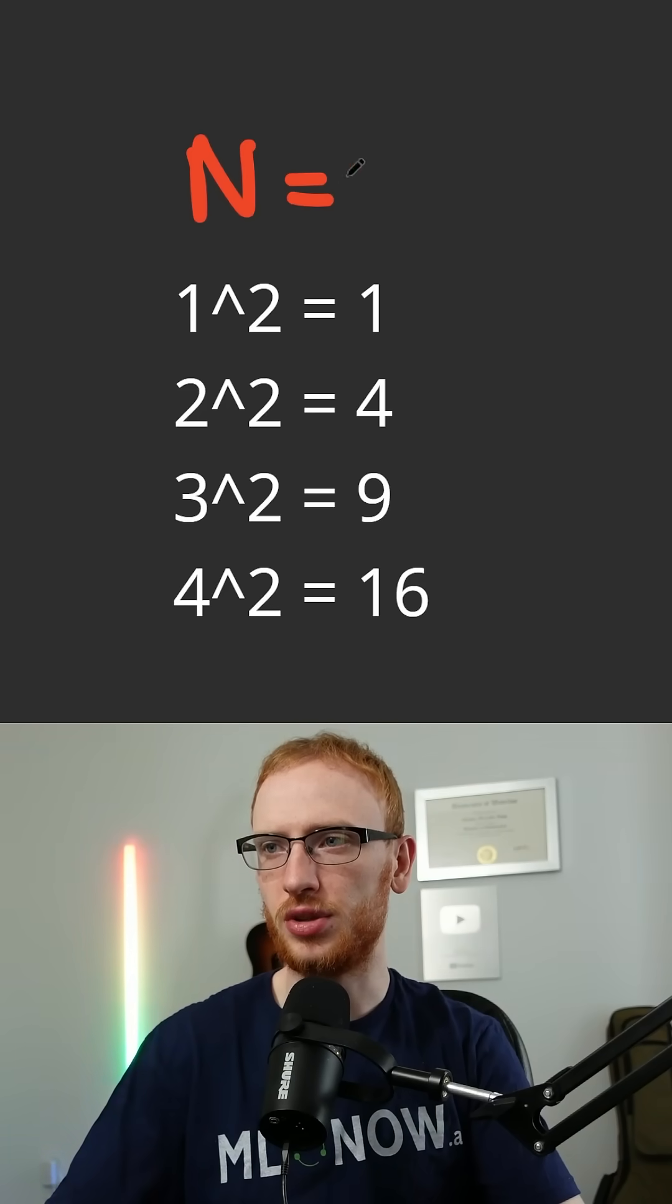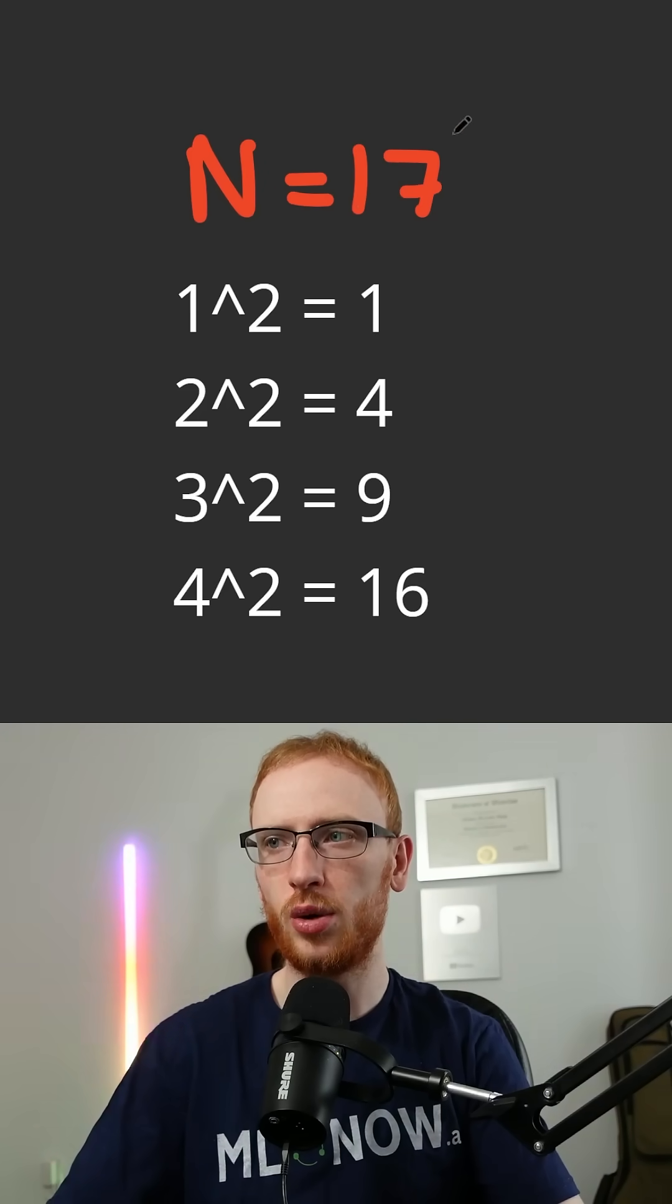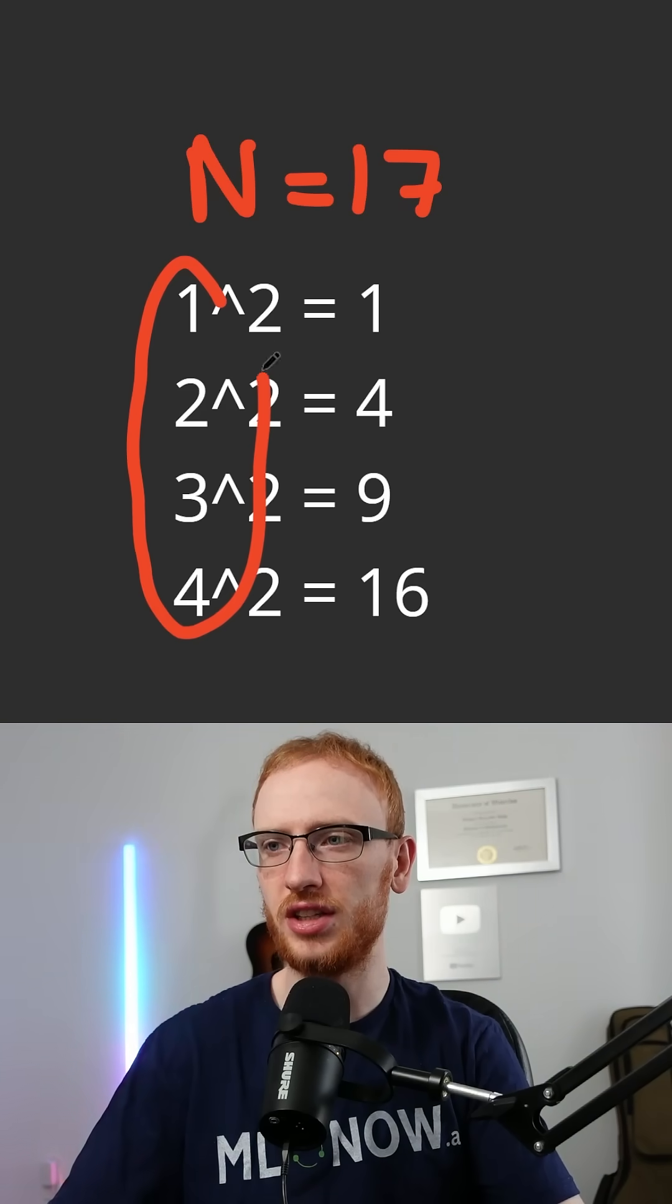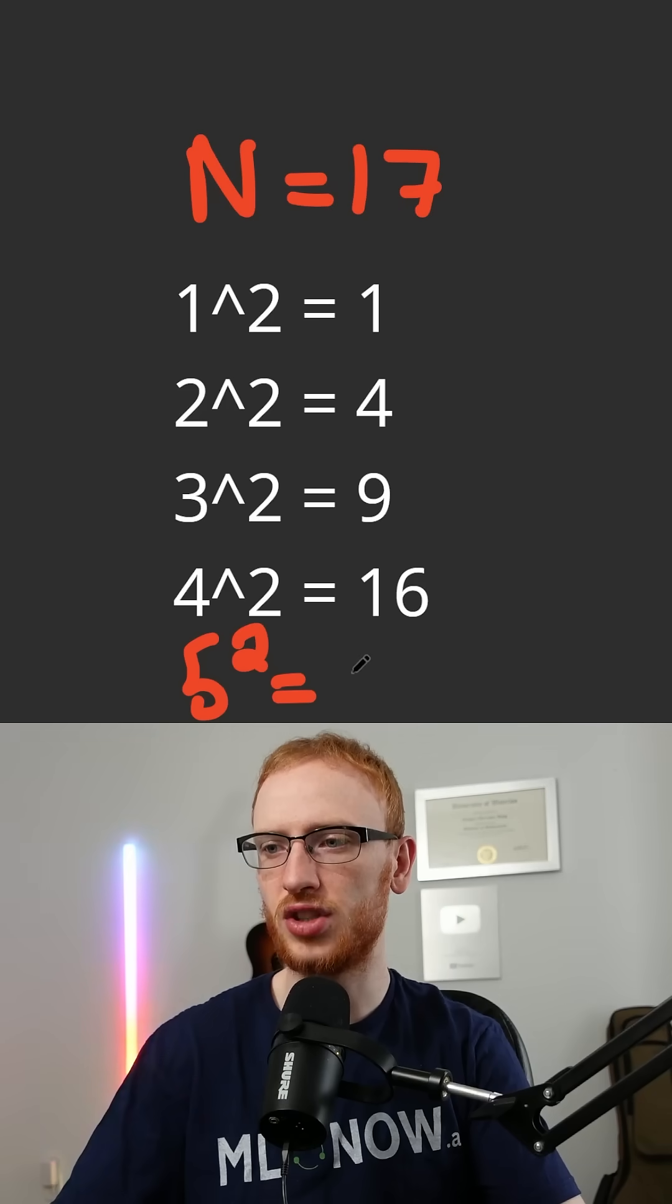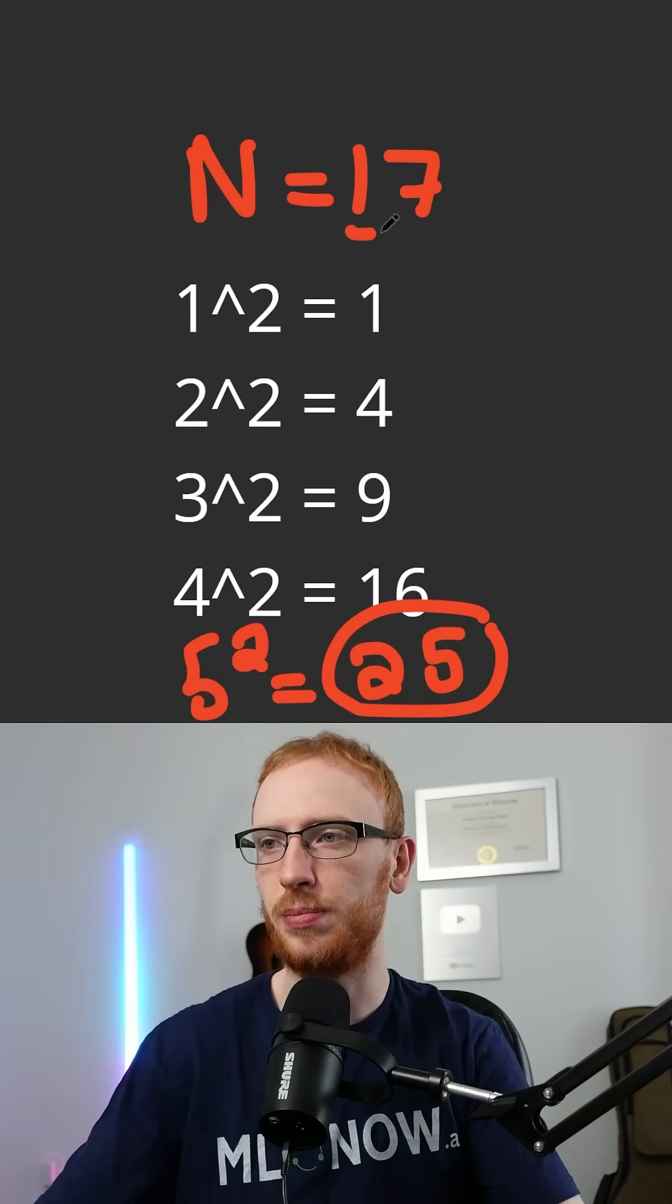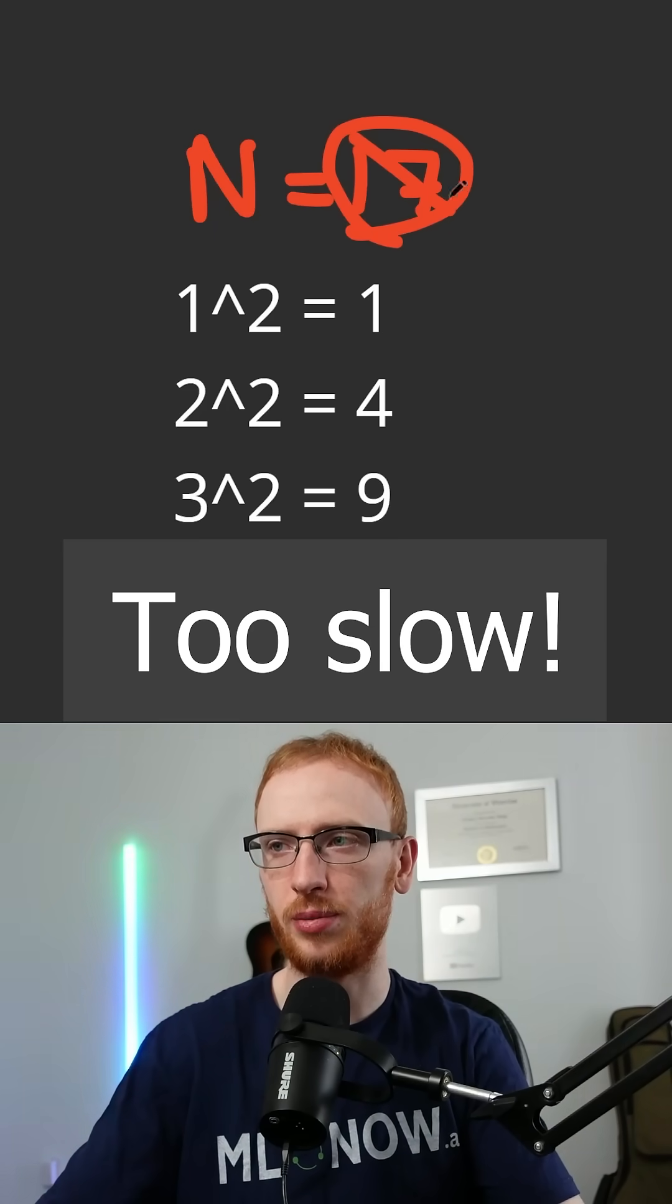So if you have a number like n is equal to 17, and you want to know if that is a perfect square, you could just enumerate over all of the integers, and once you get to the point, 5 squared, when you surpass that number, the square of the number is bigger, then there's no way that can be a perfect square.